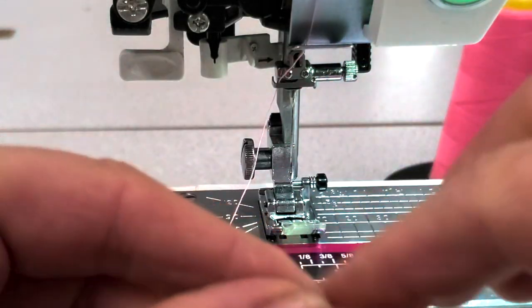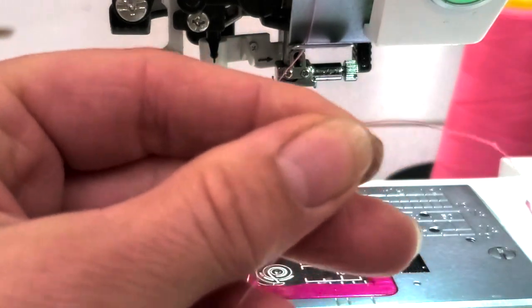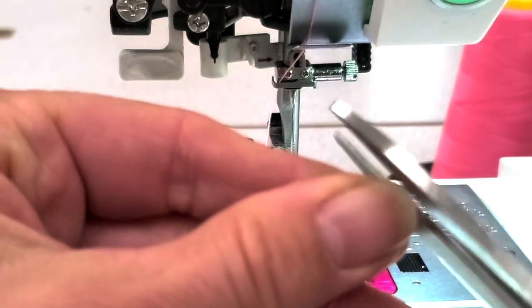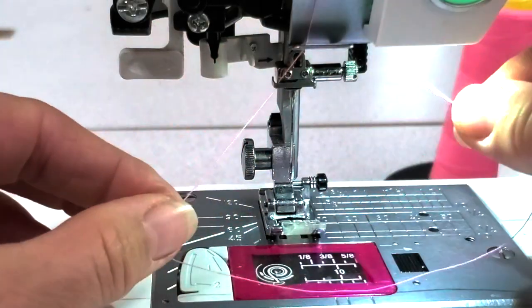Now you're going to be tempted to lick your thread, but we want to be more hygienic than that. If it's fuzzy at all, it's going to be really hard to get through the needle. So using some sharp scissors, give your thread a haircut and then put it through the needle.